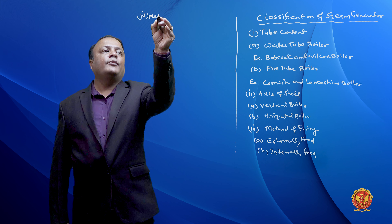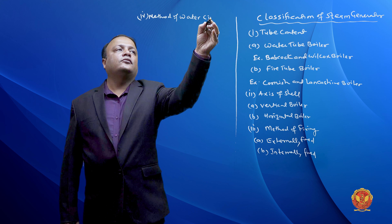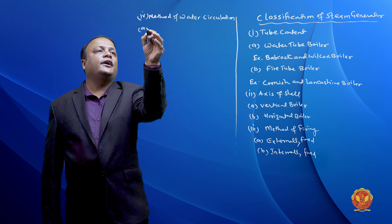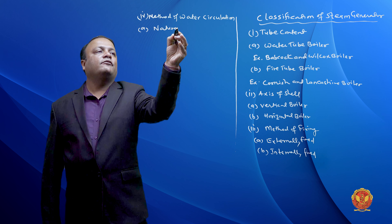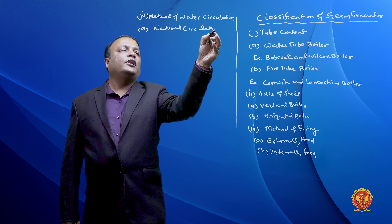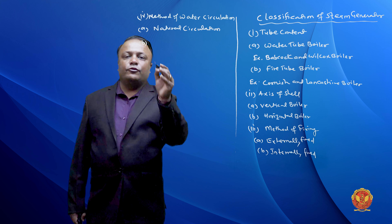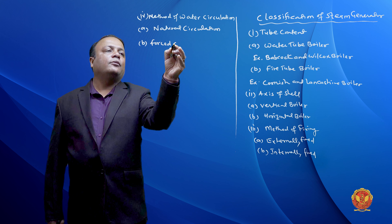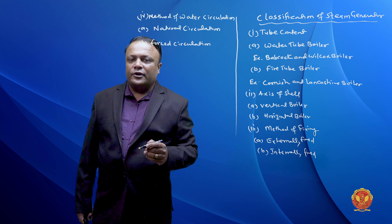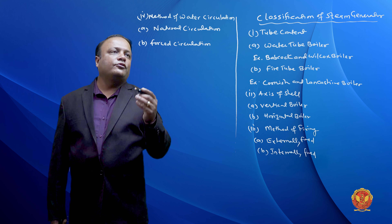The third classification is the method of firing — that is, how combustion is started inside the boiler. The first type is the externally fired boiler, and the second is the internally fired boiler. If the furnace is located outside and combustion of fuel occurs outside, it is called externally fired. If combustion of fuel occurs inside the furnace, it is called internally fired.